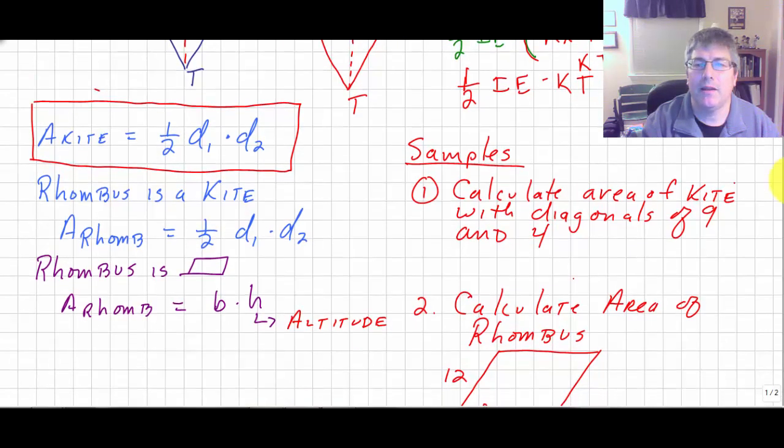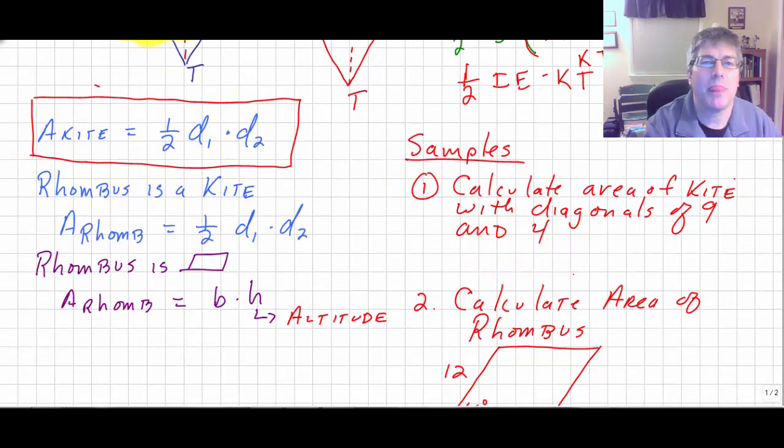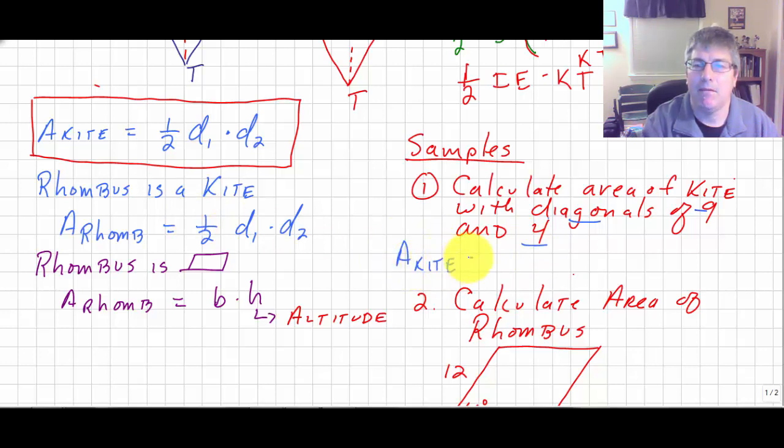So let's take a look at a couple of sample problems. Calculate the area of a kite with diagonals of 9 and 4. Well, I have my two diagonal measures, 9 and 4.